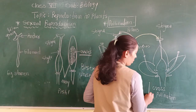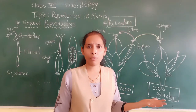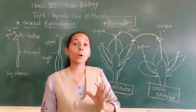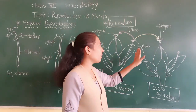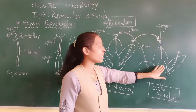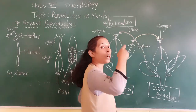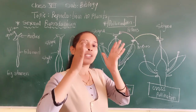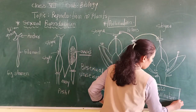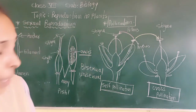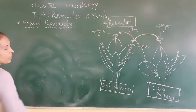The next type of pollination is cross-pollination. If a plant has a number of flowers, the transfer of the pollen grain from the anther of one flower to the stigma of another flower — of the same plant or of the same species — is called cross-pollination. Here I will draw so you can understand exactly what is meant by cross-pollination and self-pollination.